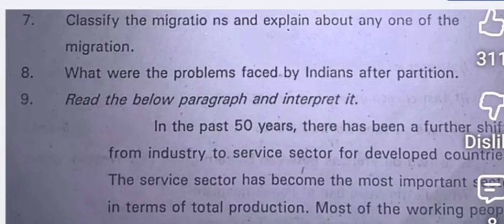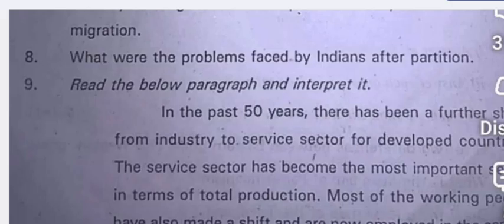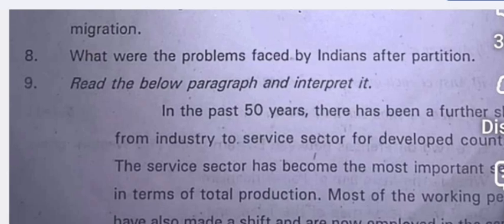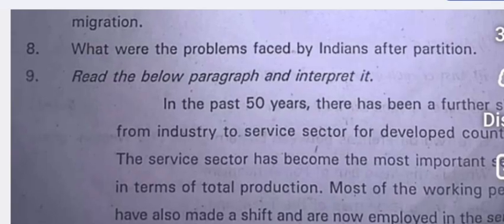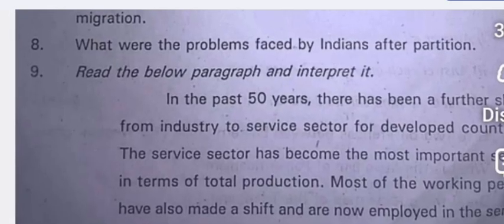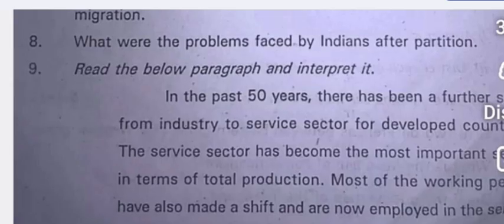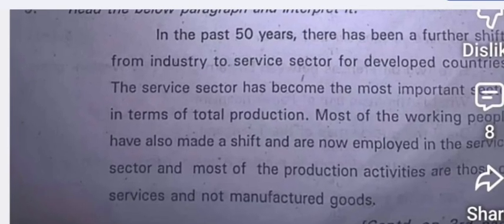Section 2: Classify the migrations and explain about any one type of migration. What were the problems faced by Indians after partition? After partition, the main land suitable for cultivation was lost — it went into the share of Pakistan. In India, many problems started — religious tolerance was lacking at the time, and there were many problems in the field of agriculture. You can write several such problems.